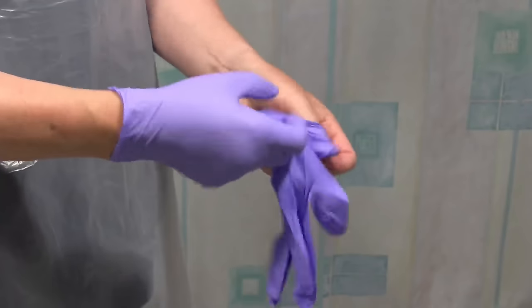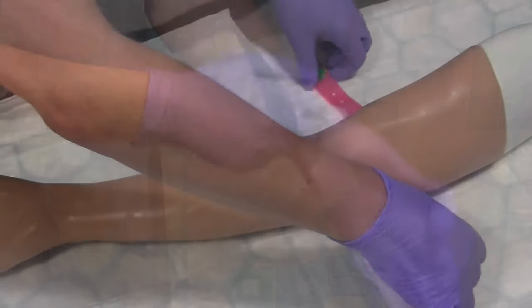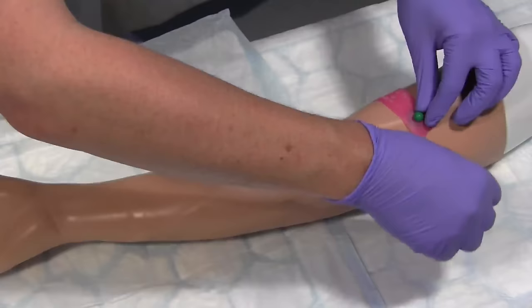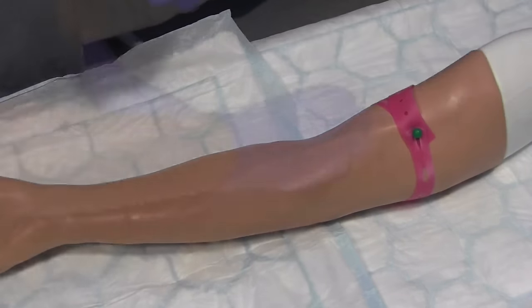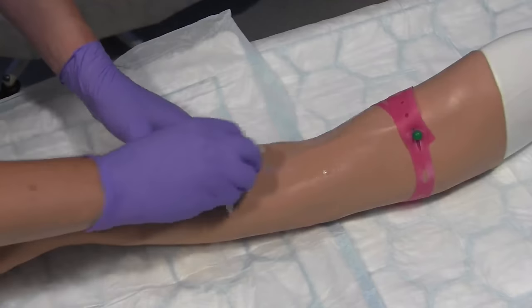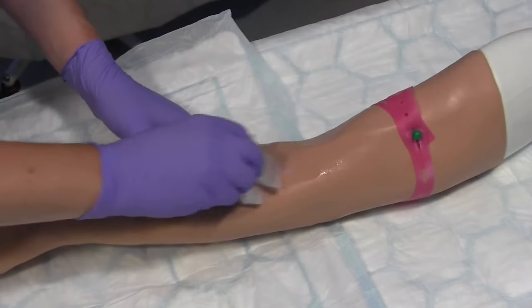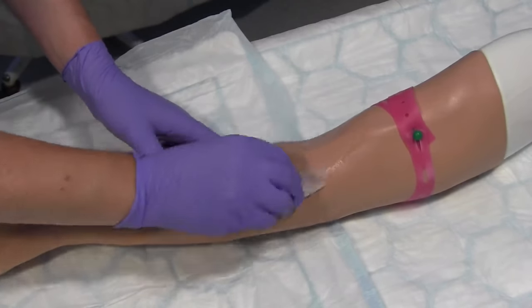Wash your hands and put on your gloves. Reapply the tourniquet. Clean the site vigorously using a crosshatch motion for 30 seconds and then leave it to dry for a further 30 seconds.